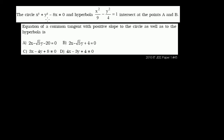The circle x squared plus y squared minus 8x equals 0, and the hyperbola x squared over 9 minus y squared over 4 equals 1, intersect at the points A and B. The equation of a common tangent with positive slope to the circle as well as to the hyperbola is what we need to find.